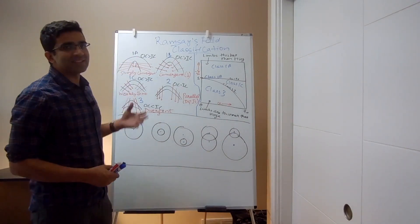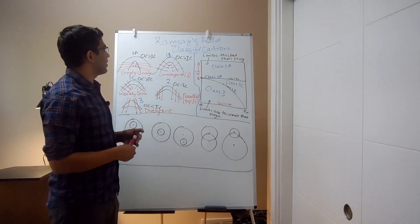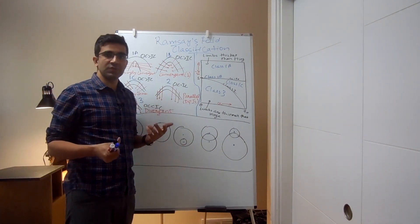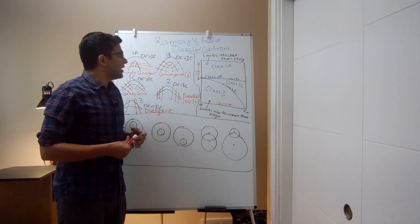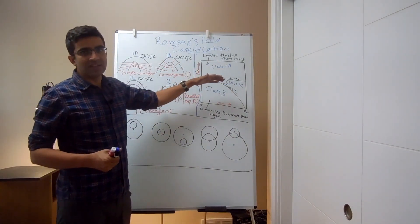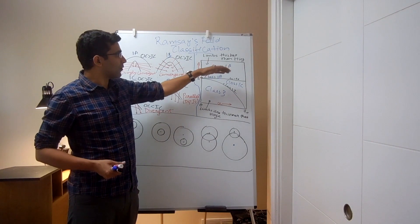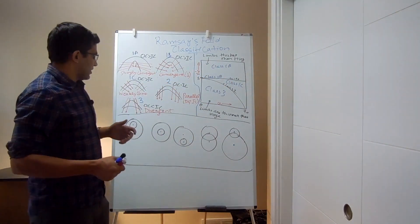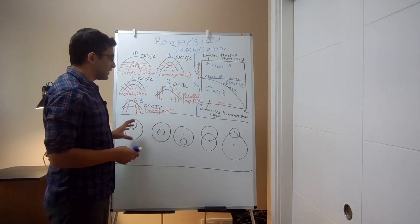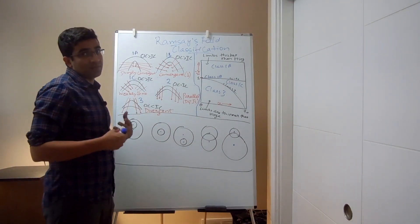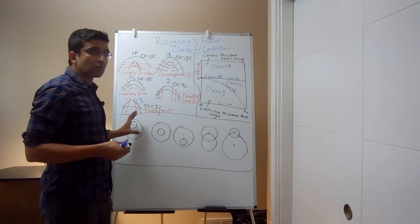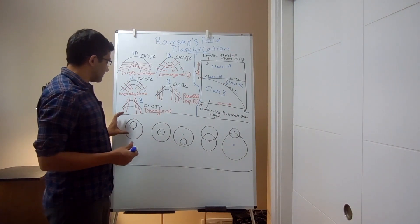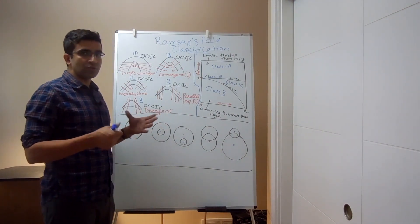Welcome back. In this last part, we will discuss the divergent, convergent, or parallel pattern of dip isogons across different classes of folds - class 1a, 1b, 1c, 2, and class 3. We will also relate it to the concept of curvature, using the size of a circle as a proxy, where the radius of the circle is inversely proportional to curvature.